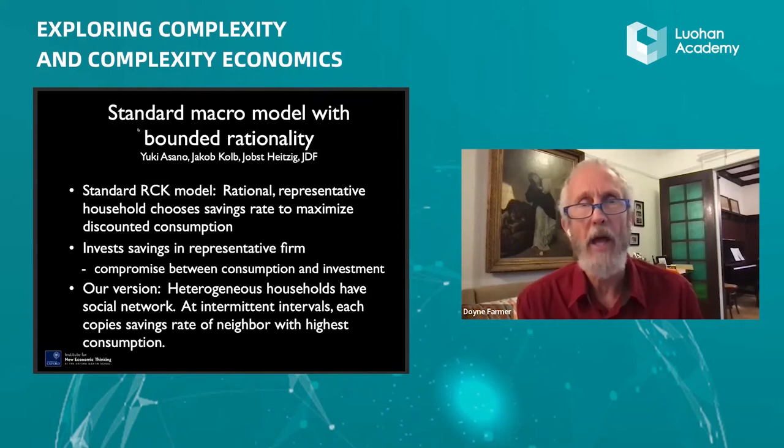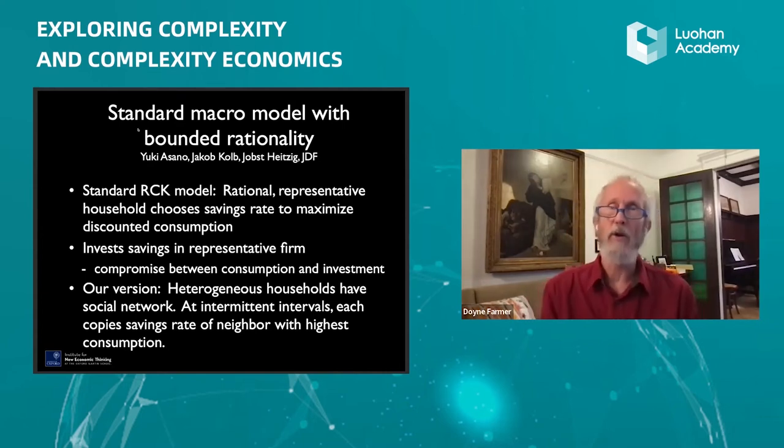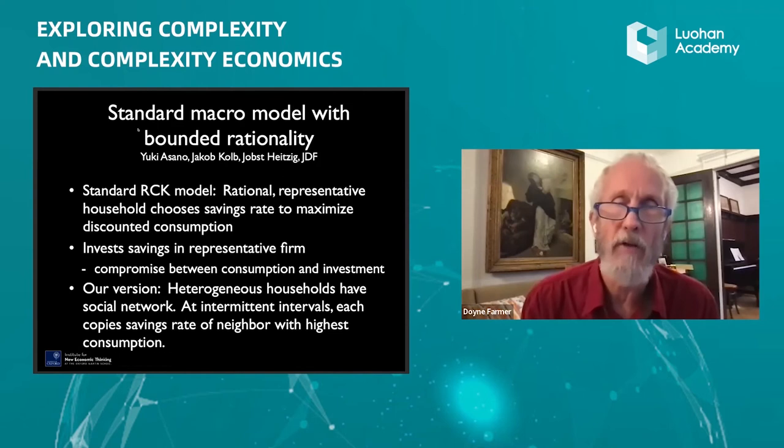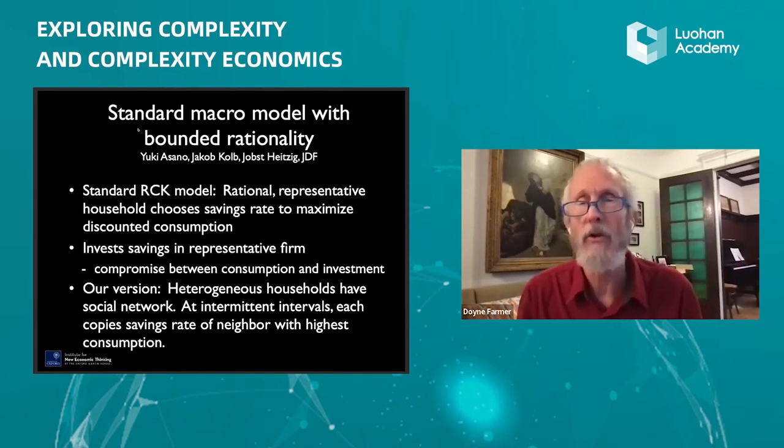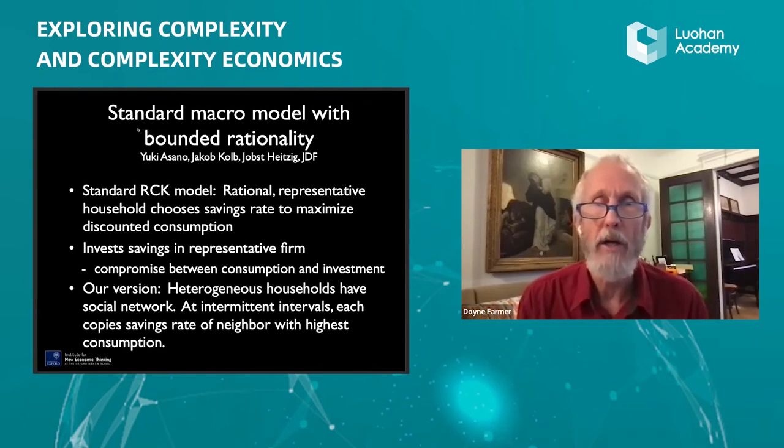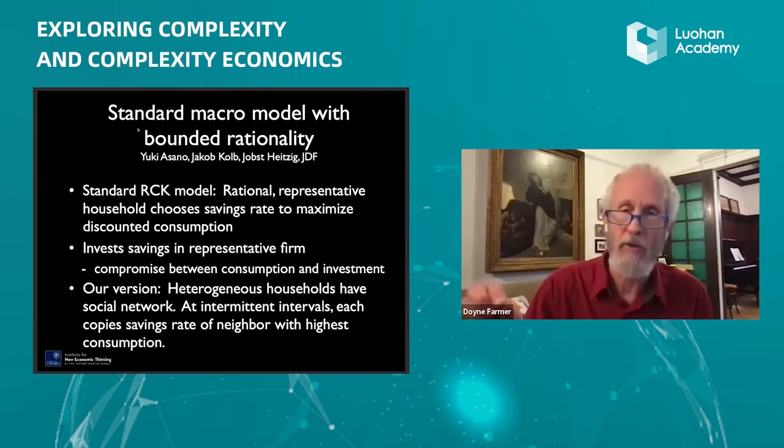So now I'm going to give a couple of examples where that happens. One is a model that we made. We started with a standard economics model, the RCK model for savings rate. So the standard model, you assume there's a rational representative household, single one that chooses a savings rate to maximize discounted consumption.